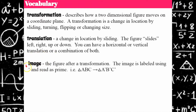"Image" is our next vocabulary word. This is the result of the transformation — the figure after it's been transformed. We label the image using this little apostrophe, which we call prime and read as prime.